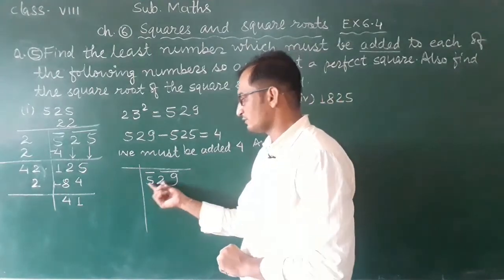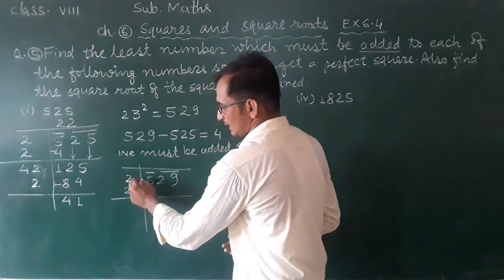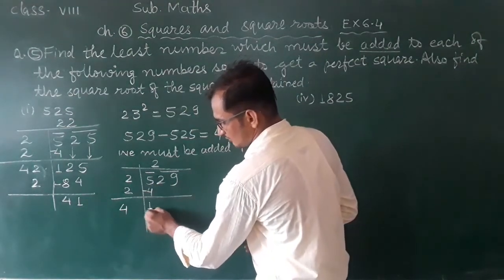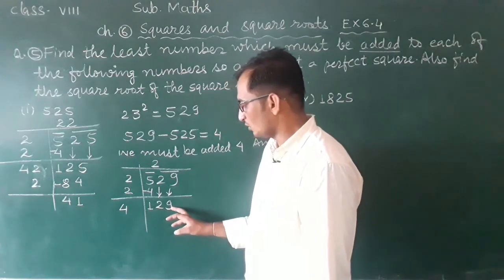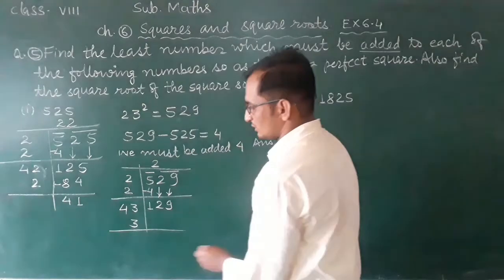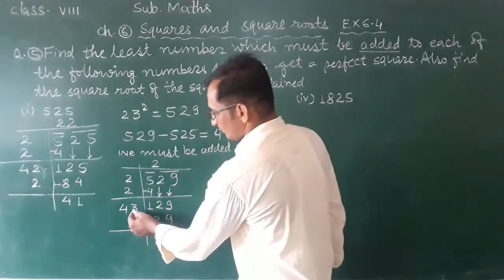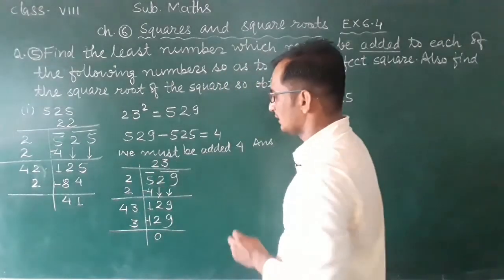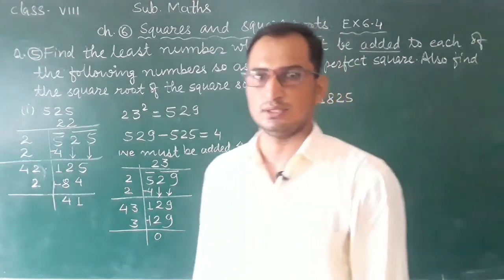Let me verify: 529, this is the first pair, second pair. 2 squared is 4, which is less than 5. 2 times 2 is 4. Then 43 times 3 equals 129 exactly. The remainder is 0, and we put 3 here. So the square root of 529 is 23. This is your answer. Thank you.